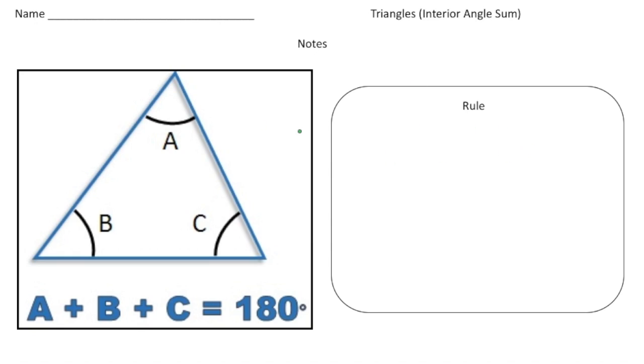So on the first page here we have a triangle, and really there's only one major idea you need to remember. The sum of the interior angles of a triangle always adds up to 180 degrees.